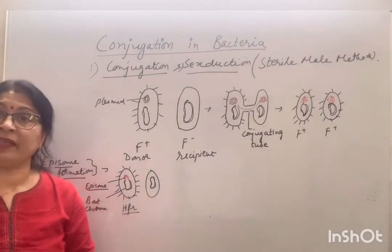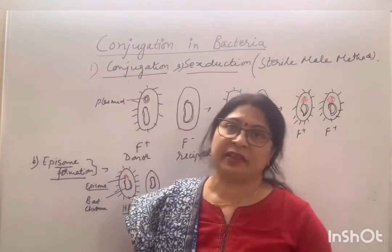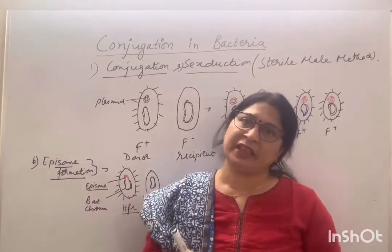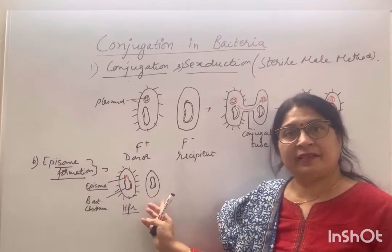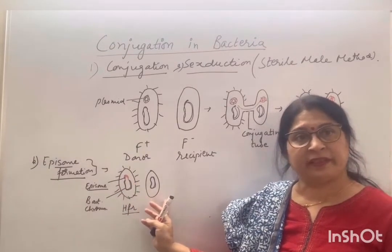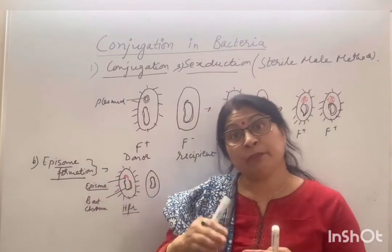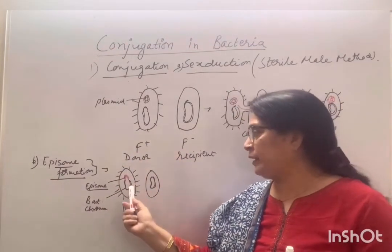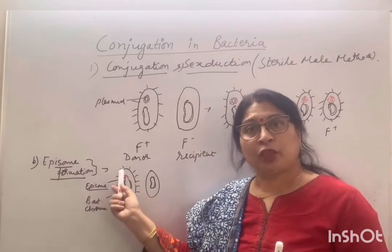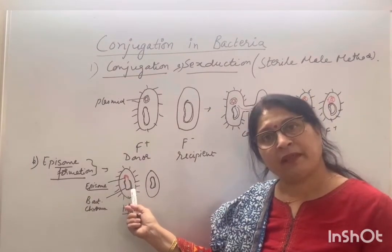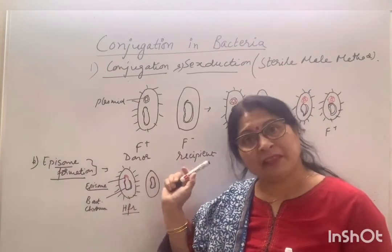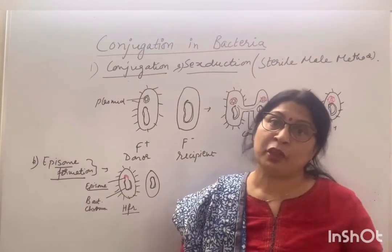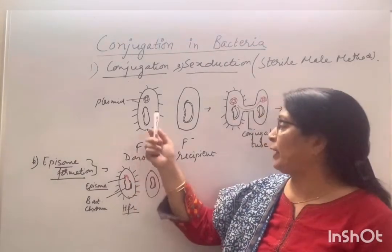HFR stands for High Frequency of Recombination. It means the cell has a very high frequency of transferring genetic material to the recipient cell — even a thousand times more than that of the F-plus cell. So when the plasmid is attached to the bacterial chromosome, this part is called the epizome. The nucleotide sequence in the bacterial chromosome is compatible with the sequence in the plasmid, making this an HFR cell with very deep genetic material transfer compared to F-plus.